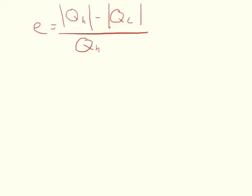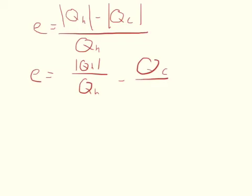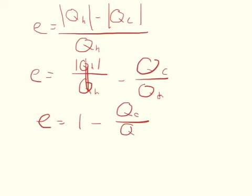And then this can actually be broken up a little bit. We can say that the energy, so if we have the absolute value of QH over QH minus QC over QH, we end up getting to where this cancels out and becomes 1, so the energy is equal to 1 minus QC over QH.